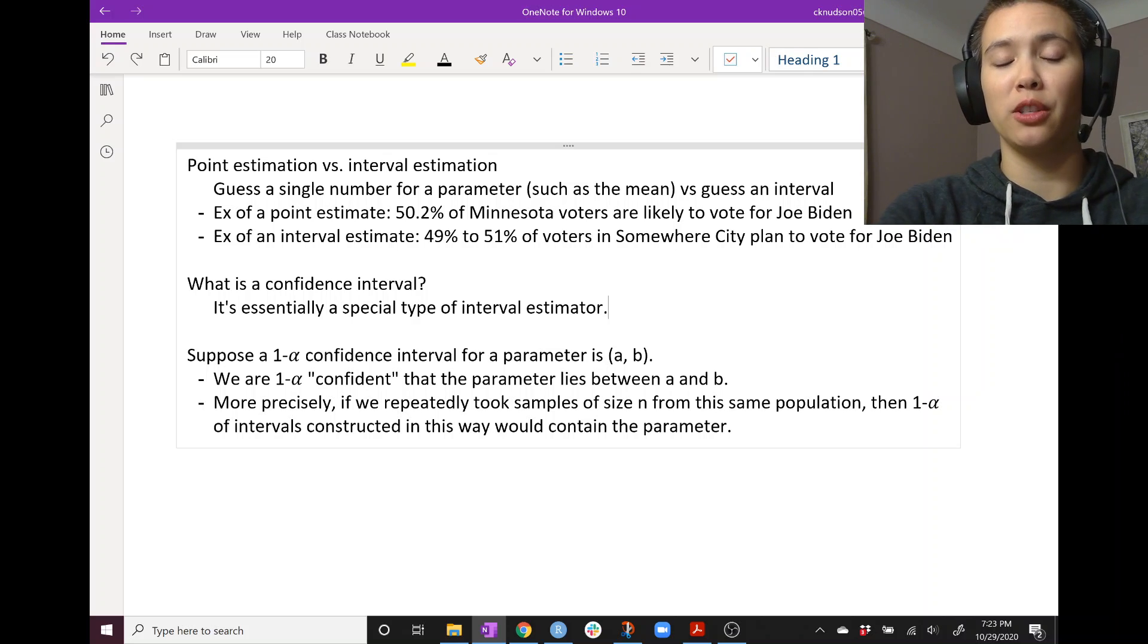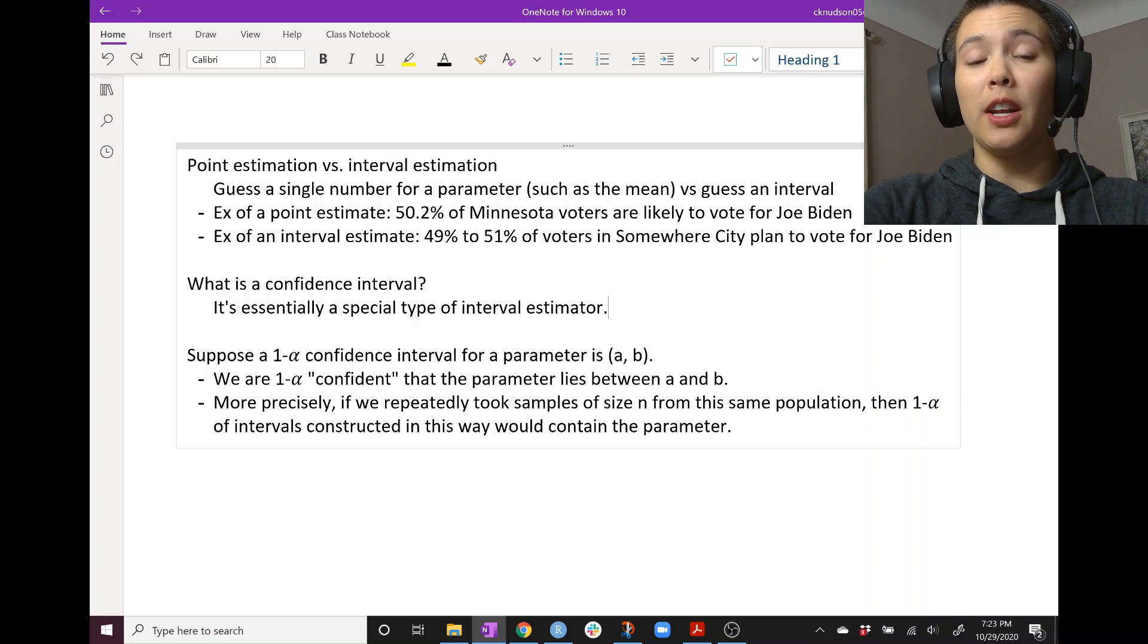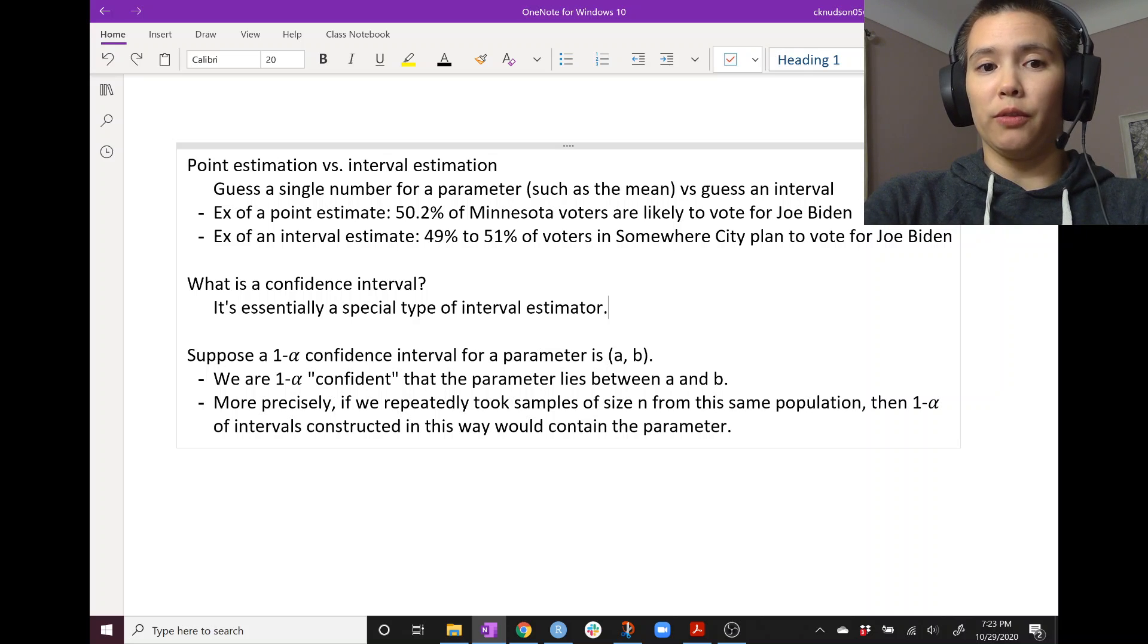Okay, so that's just a single point, 50.2%. Now let's give an interval estimate. An interval estimate has to be an interval. So here the interval that I've chosen is 49% to 51%. So in some city somewhere, 49% to 51% of voters in that city plan to vote for Joe Biden.